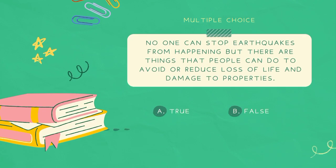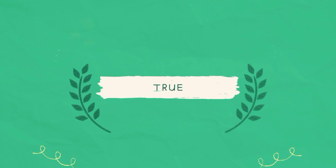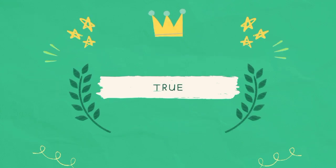Statement: No one can stop earthquakes from happening, but there are things that people can do to avoid or reduce loss of life and damage to properties. The answer is true.